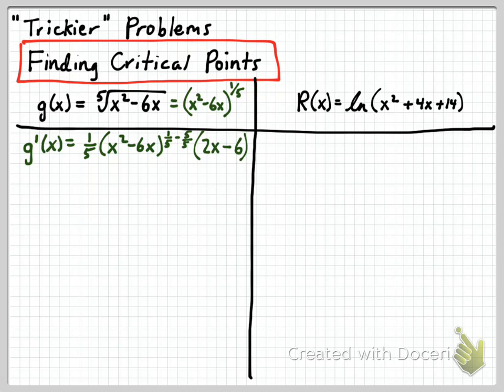So I've got that. And then now I'm going to go ahead and rewrite that, and I'm going to do this little steps at a time. We've got x 1 fifth times x squared minus 6x. 1 fifth minus 5 fifths is negative 4 fifths.